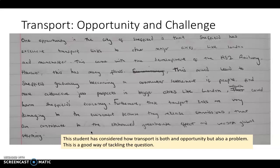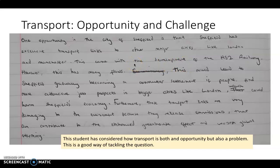It's a good answer that uses PEEG well and considers multiple issues of transport. I'm slightly confused by the reference to HS2 — HS2 hasn't been built yet, so it would be better to discuss the problems that HS2 might bring in the future. But clearly the student is talking a lot of sense and considering quite high-level ideas. It's a really good geographical answer, linking to wider ideas of geography throughout.